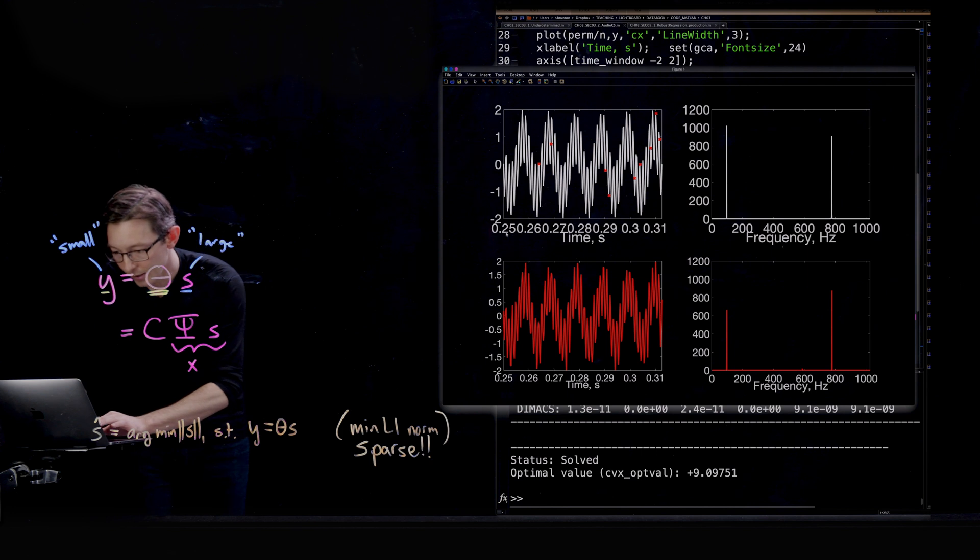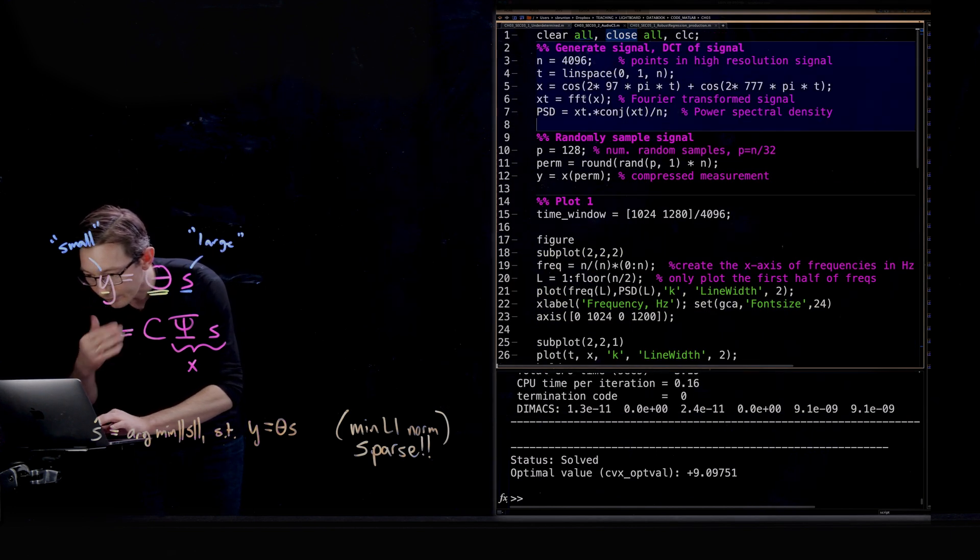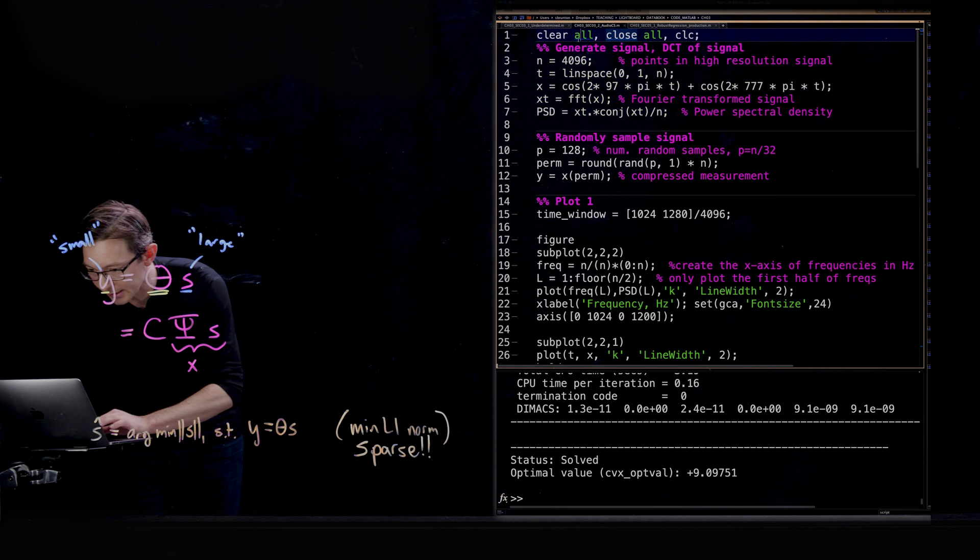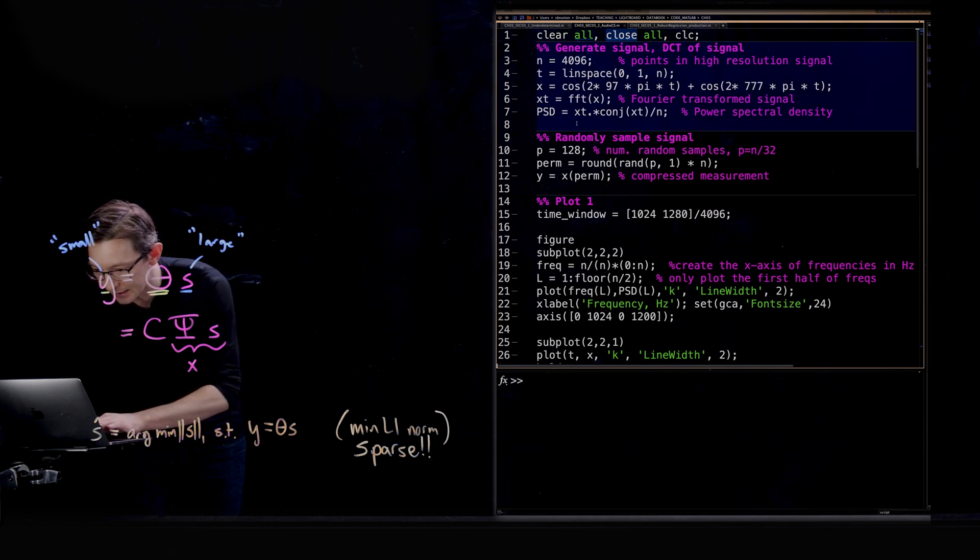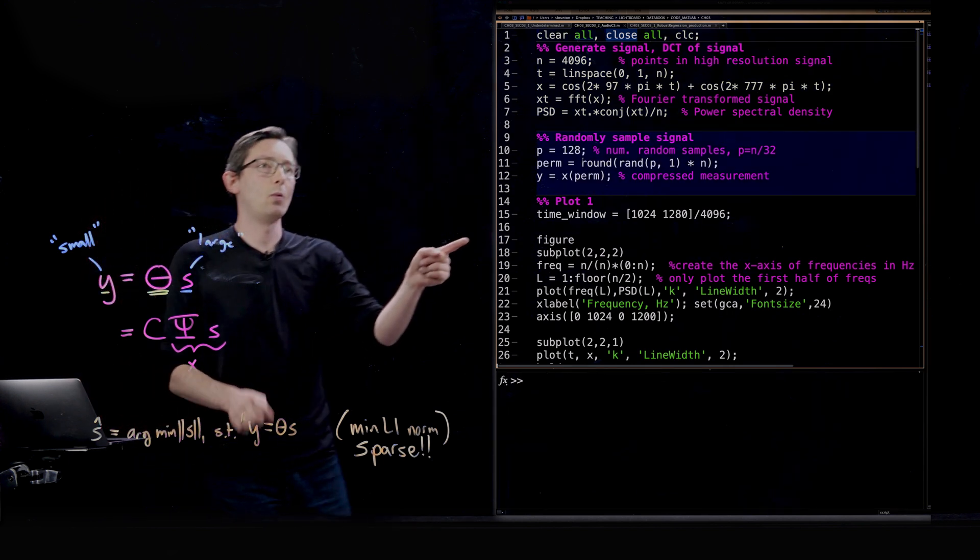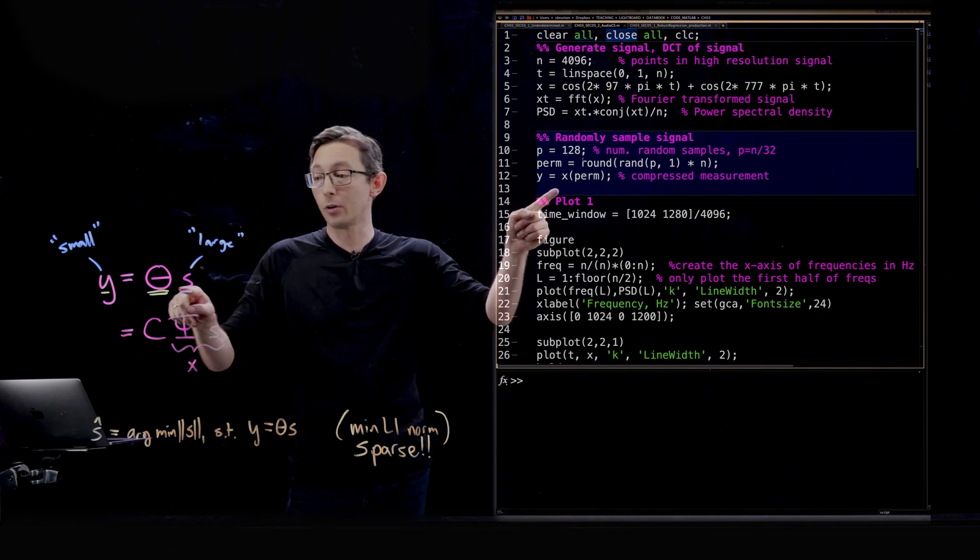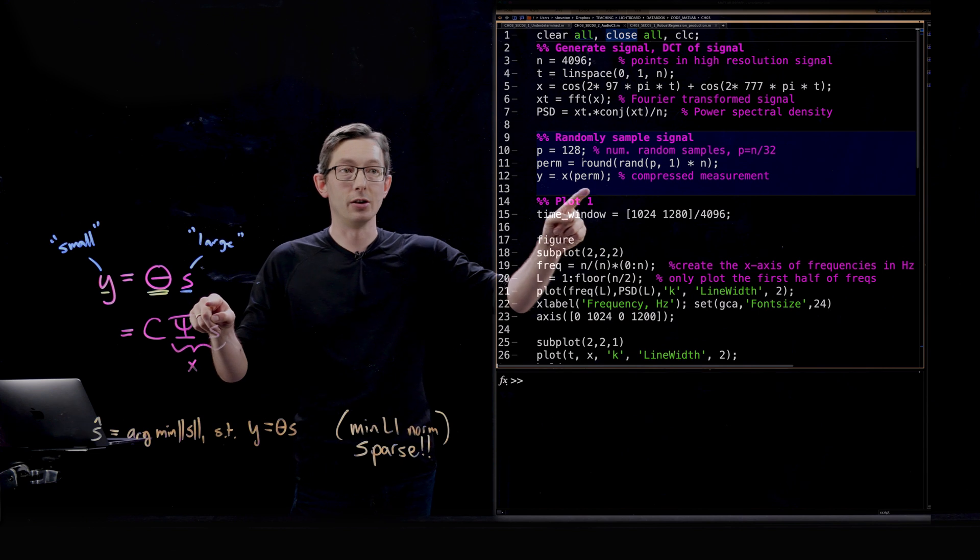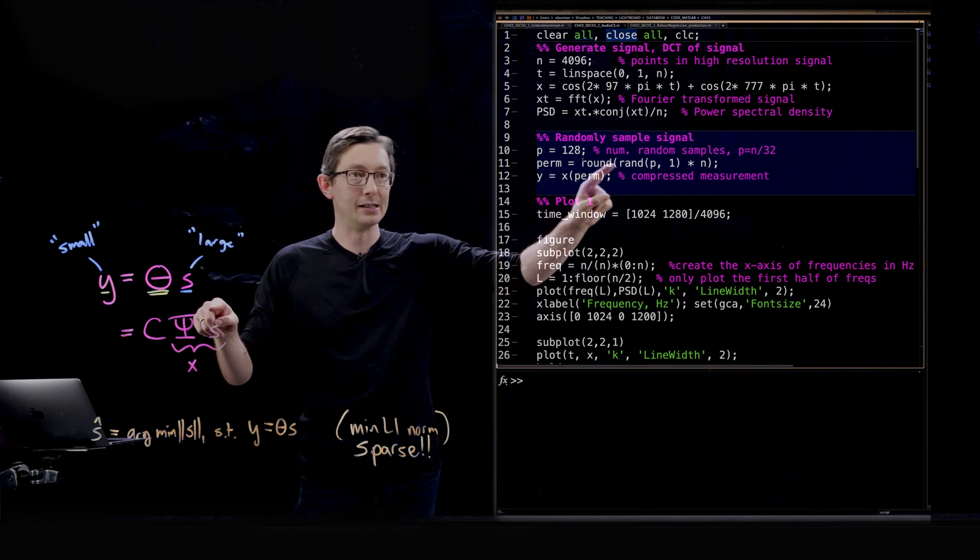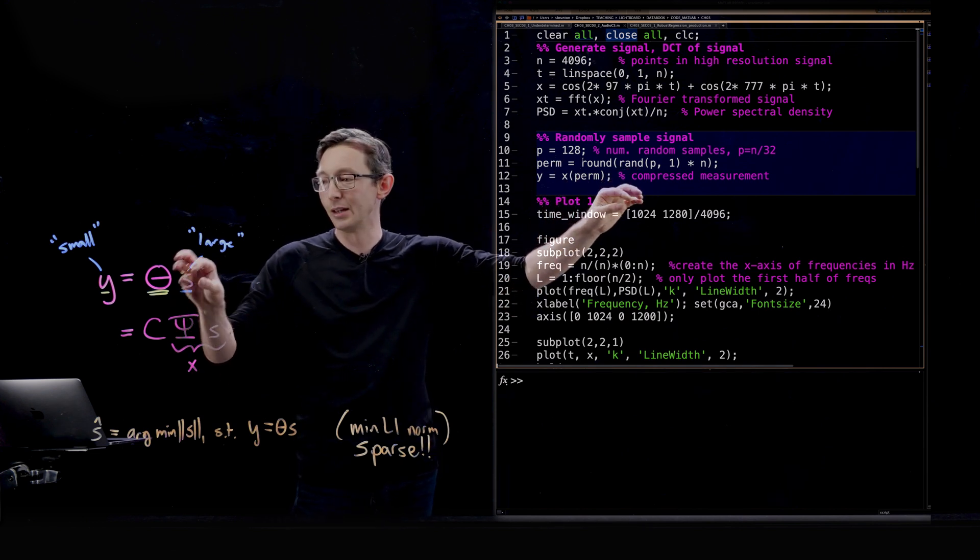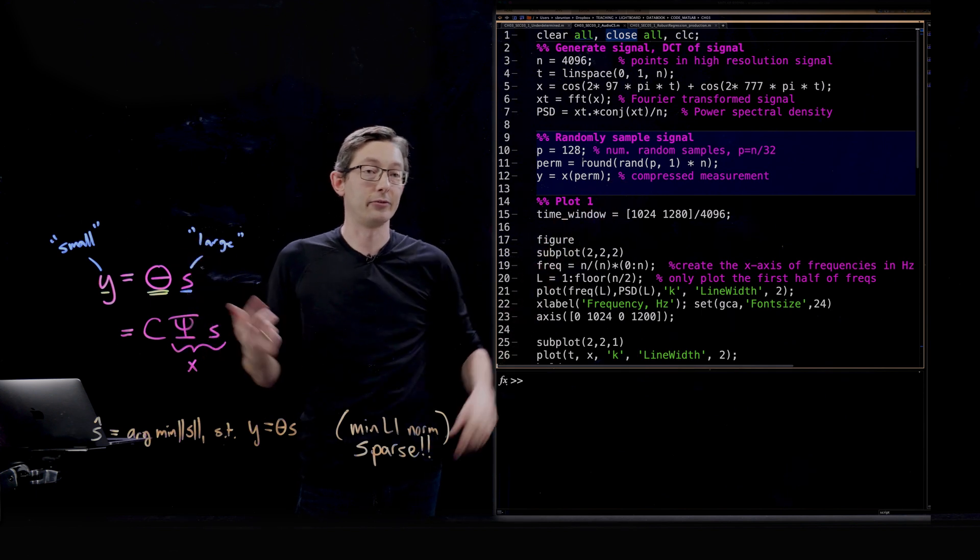I'm going to code that up because I think that will be kind of fun. So nothing really changes except here when I am downsampling in Y. What I did before was I randomly chose these, so this perm is a random vector and I'm randomly pulling those indices from X.